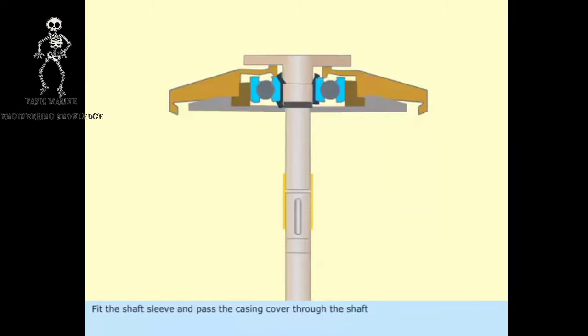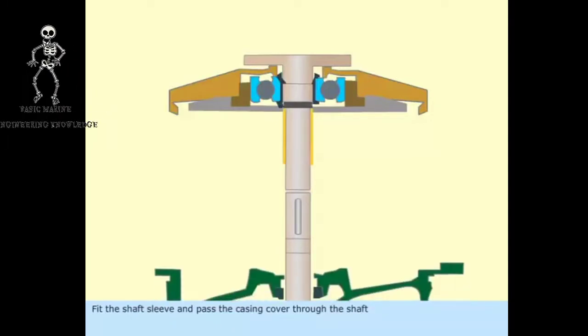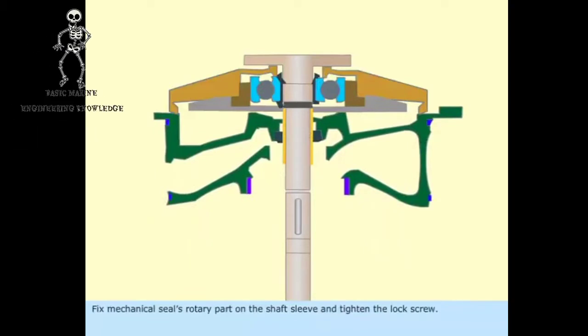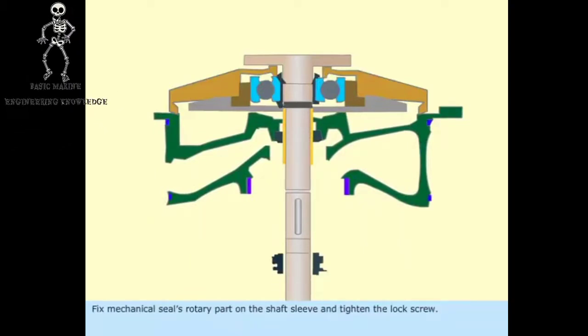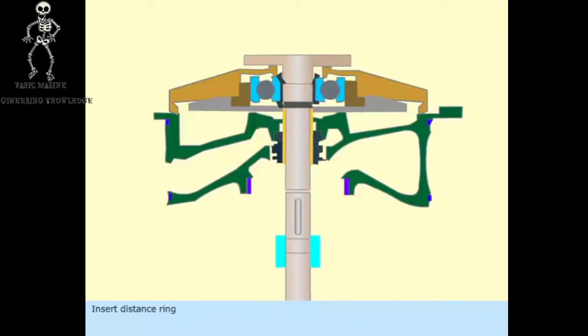Fit the shaft sleeve and pass the casing cover through the shaft. Fix mechanical seal's rotary part on the shaft sleeve and tighten the lock screw. Insert distance ring.